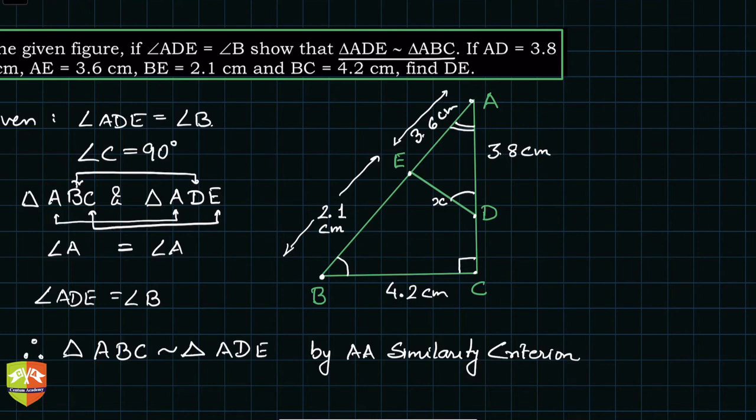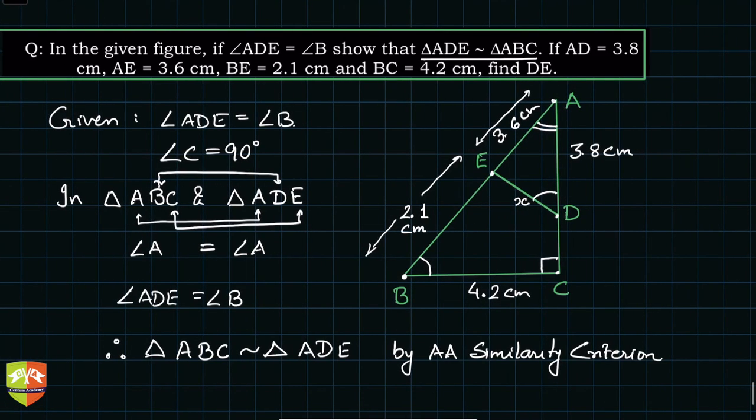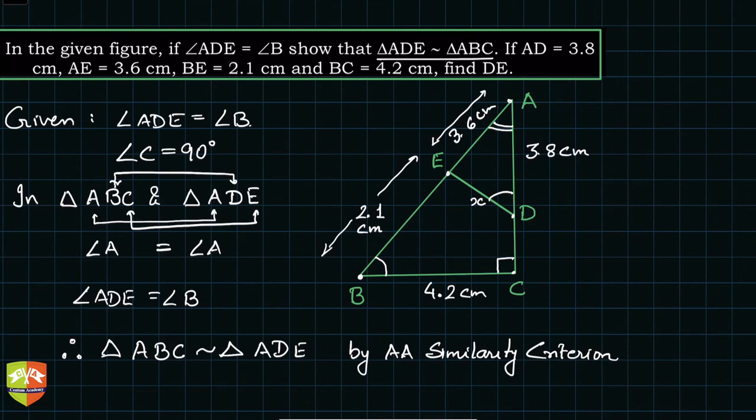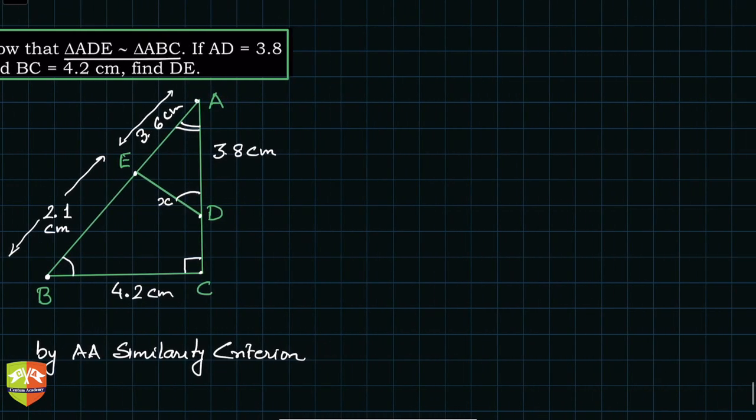So AE is given, AD is given, BE is 2.1 given, and BC is 4.2 given. So we have to find out DE. This should not be a big deal now.